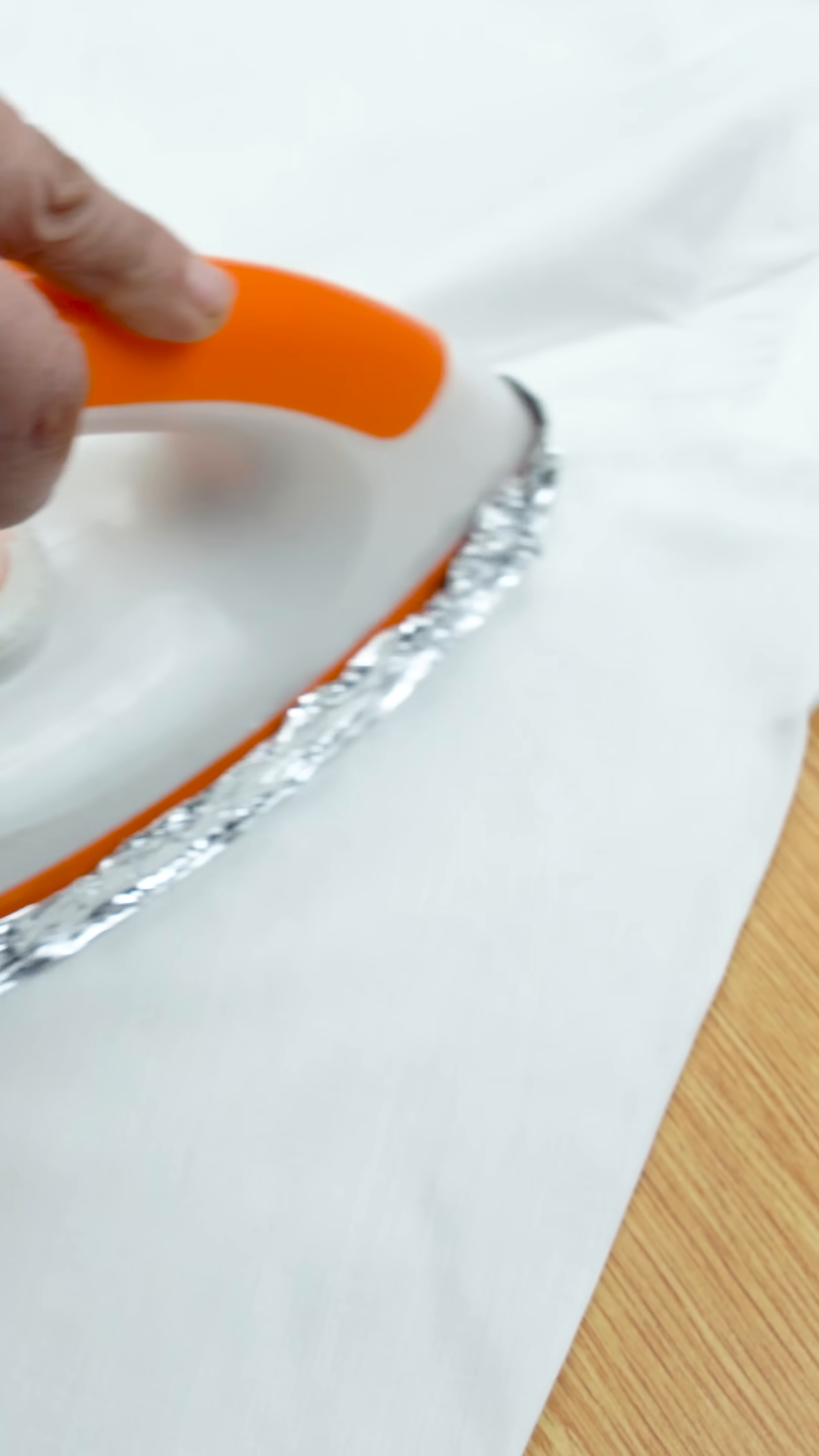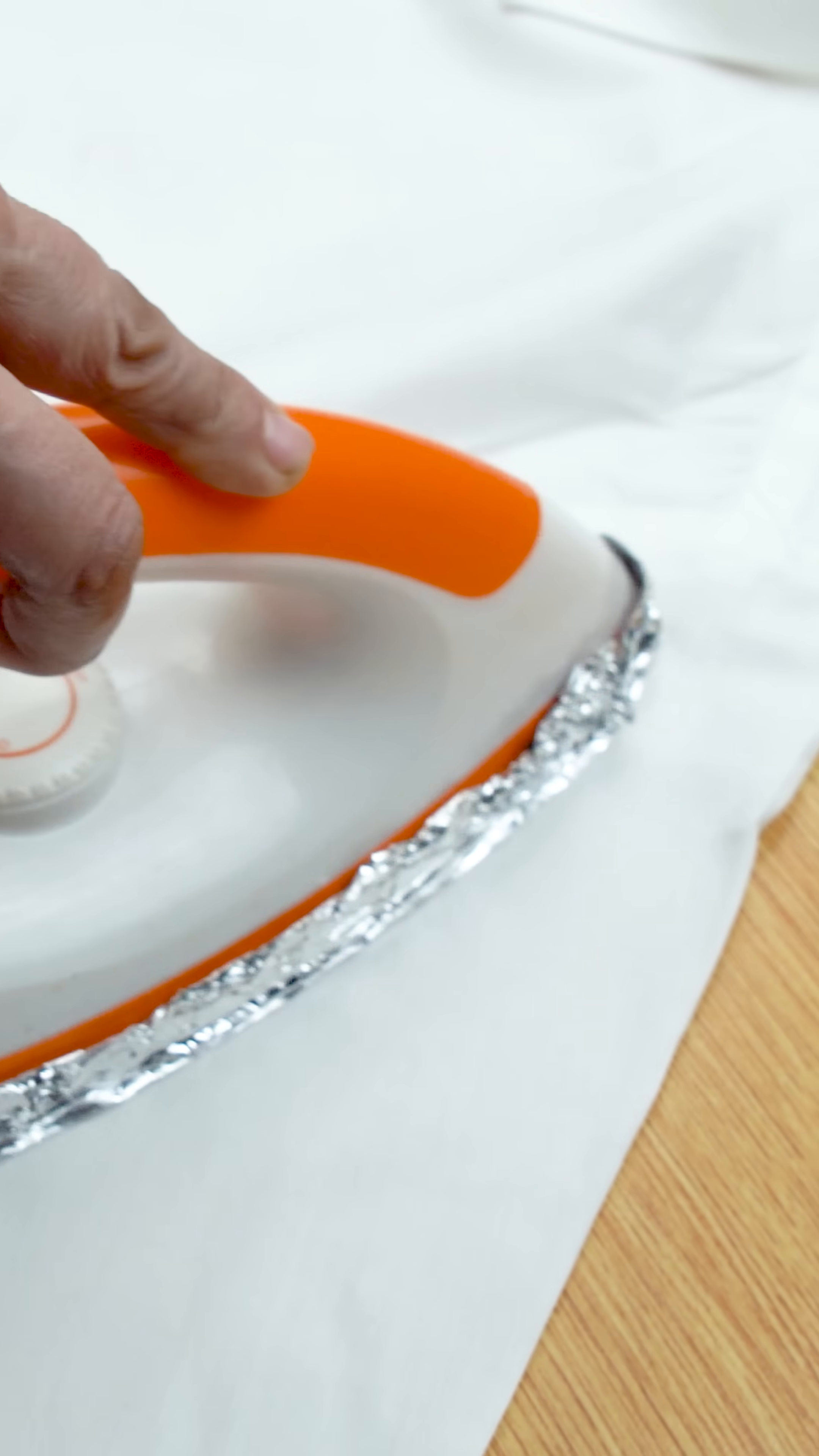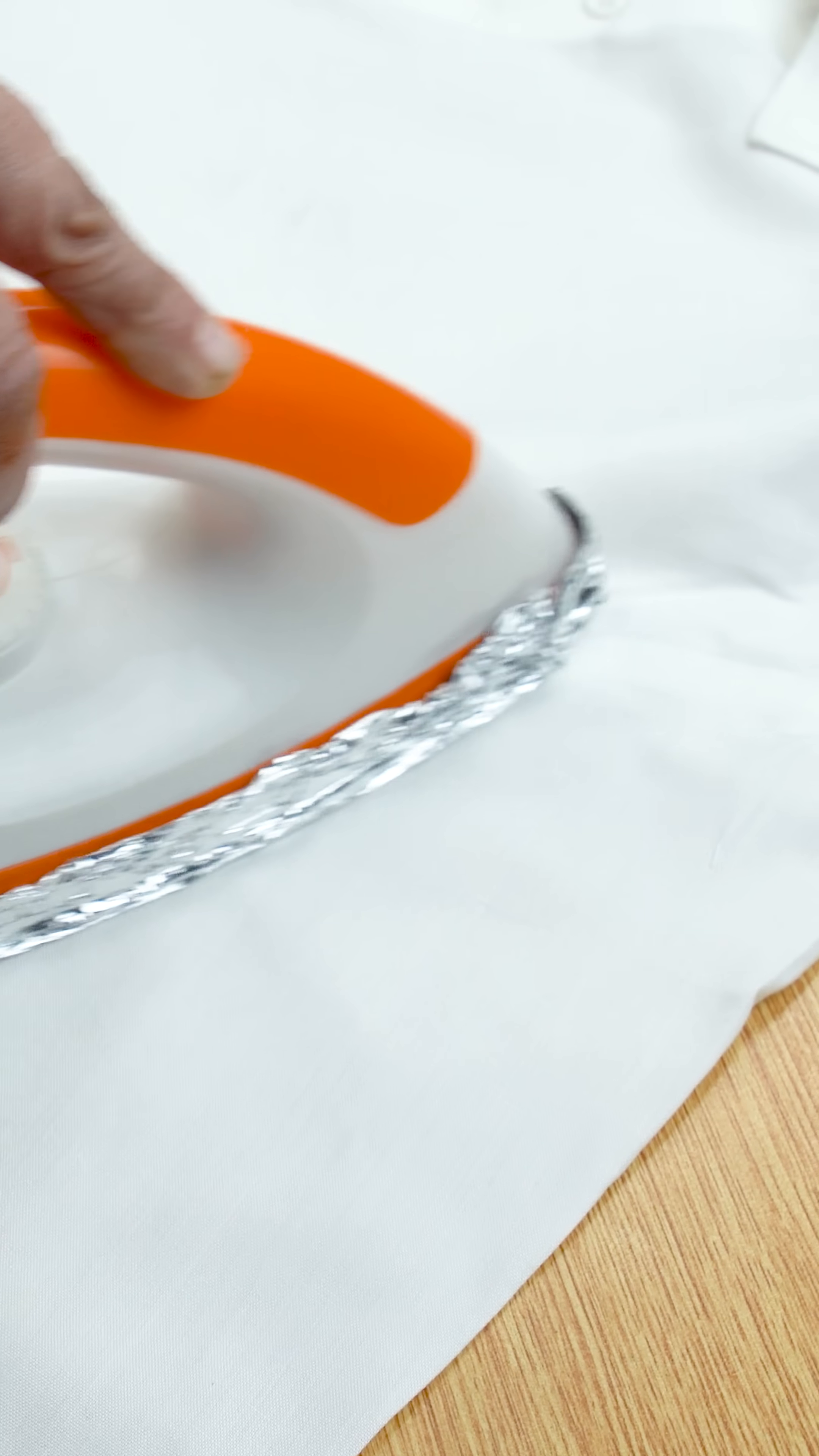The aluminum foil reflects the iron's heat back into the fabric, doubling its efficiency. This not only removes wrinkles faster, but also ensures a more uniform finish.